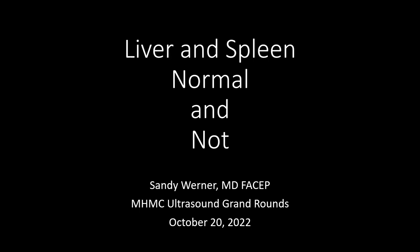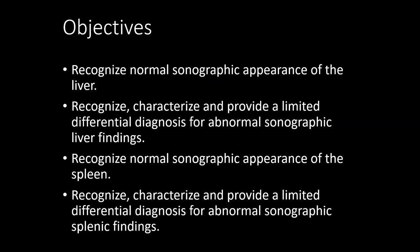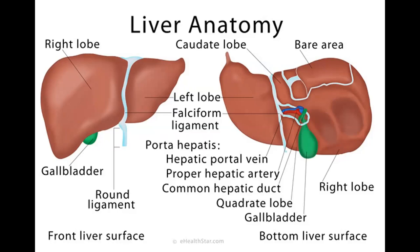This is a lecture covering liver and spleen beyond the standard FAST exam. We all cover liver and spleen during the FAST exam and look at gallbladders and kidneys, but this is material a little bit outside of that. We're going to look at some liver abnormalities and spleen abnormalities, and discuss the normal characteristics of those organs. Our objectives are to recognize the normal sonographic appearance of the liver and spleen, then identify abnormal findings and develop a limited differential diagnosis.